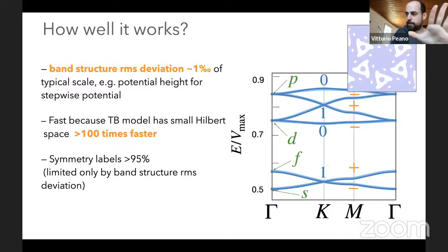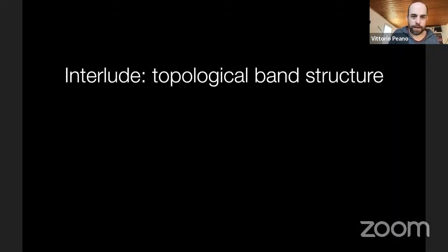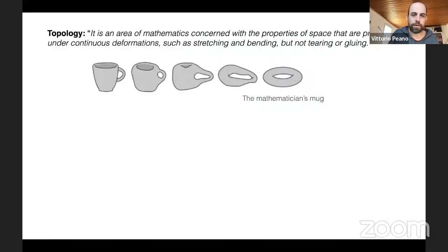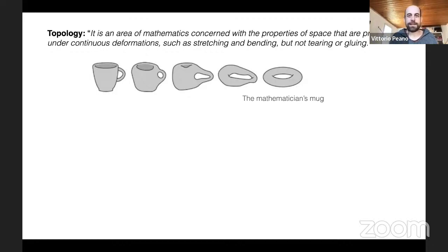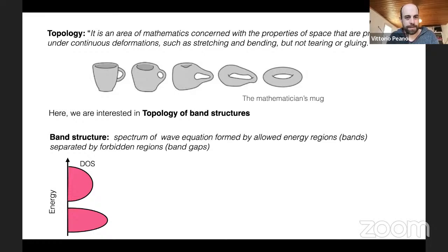Now let me discuss topology. Topology is the area of mathematics concerned with properties preserved under continuous deformation — stretching and bending, but not tearing or gluing. For oriented surfaces, the relevant topological quantity is the number of holes. In our context, we have systems with approximate translational invariance — wave systems such as light in a medium, electrons as matter waves, or elastic waves.